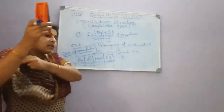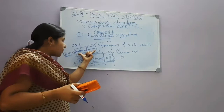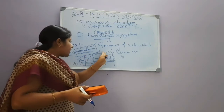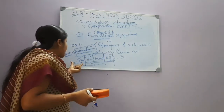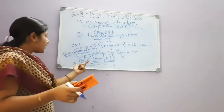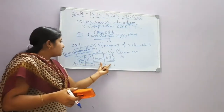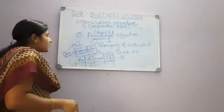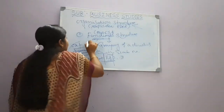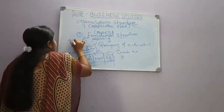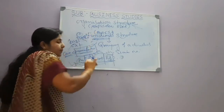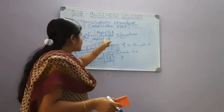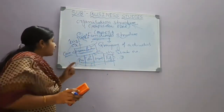The manufacturing company is one company, but they divide it into different activities on the basis of each particular activity. This functional structure of organizing is adapted by very big or large business organizations.